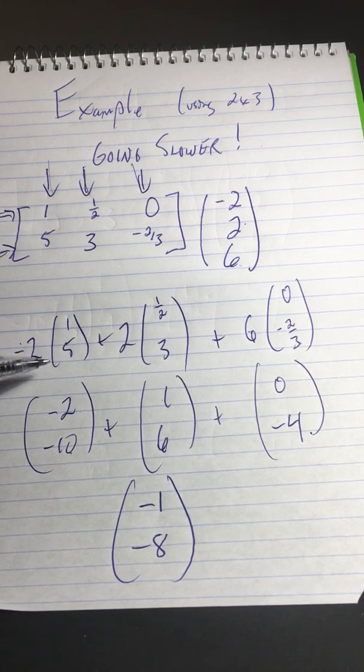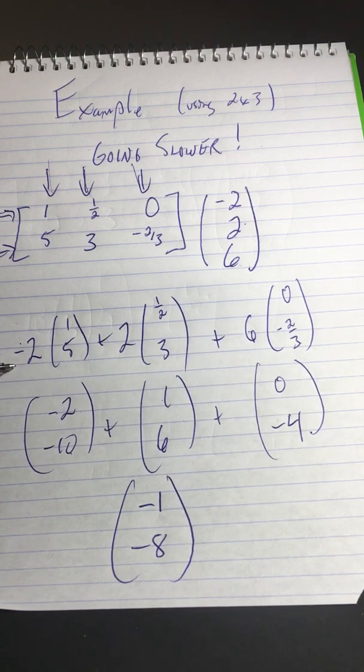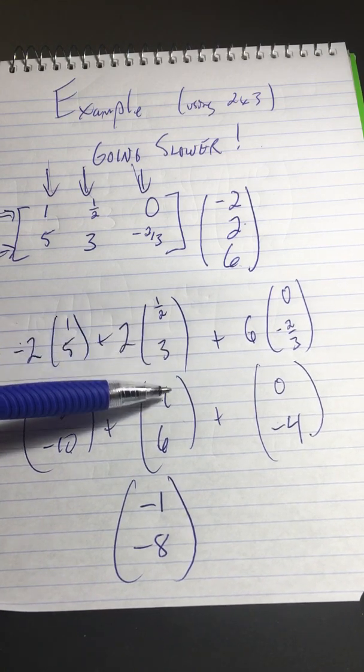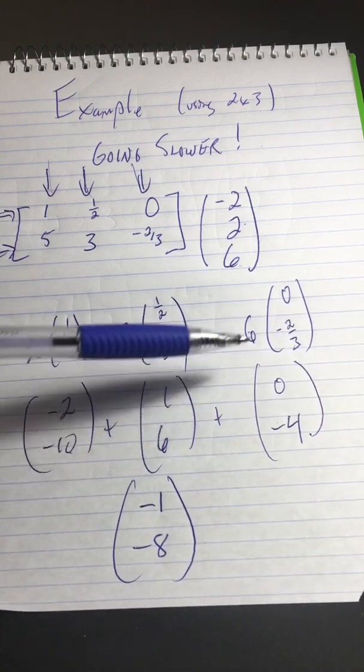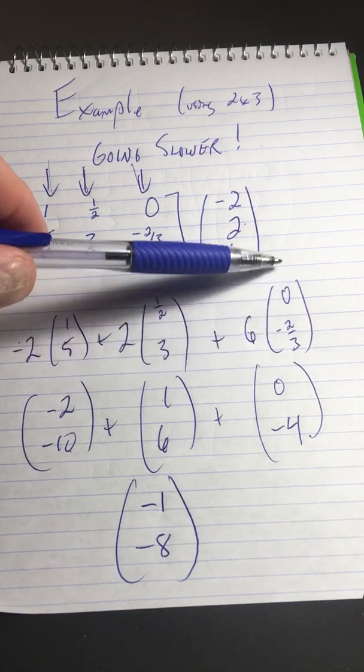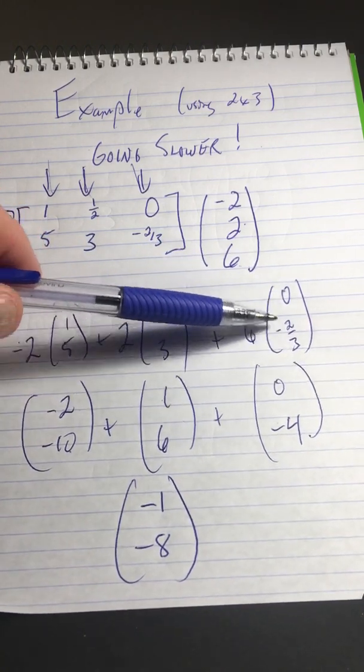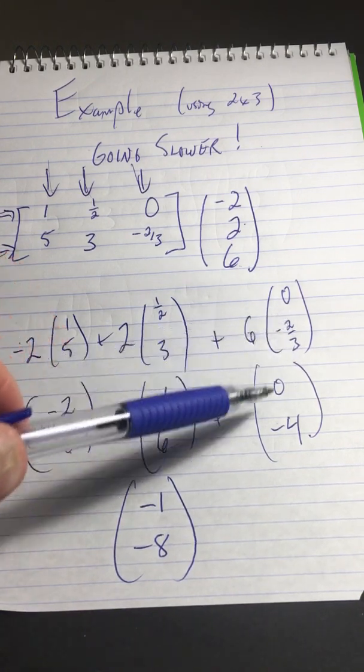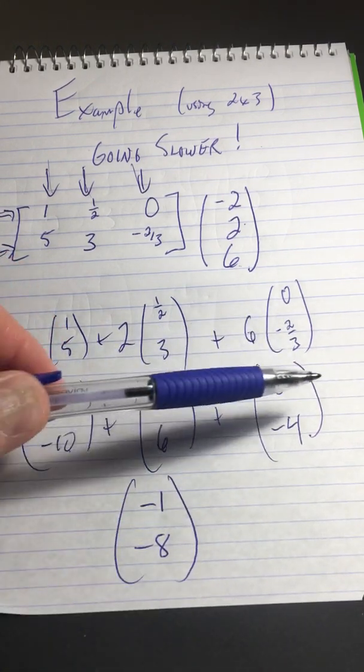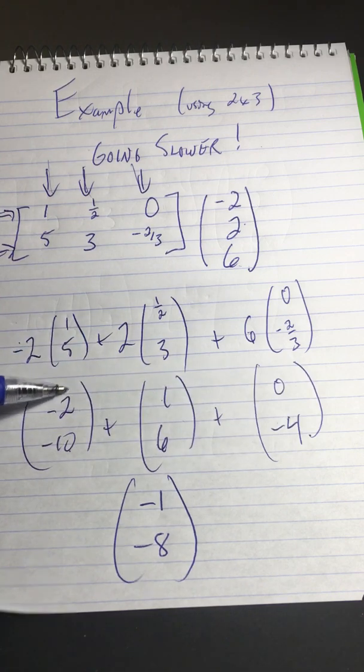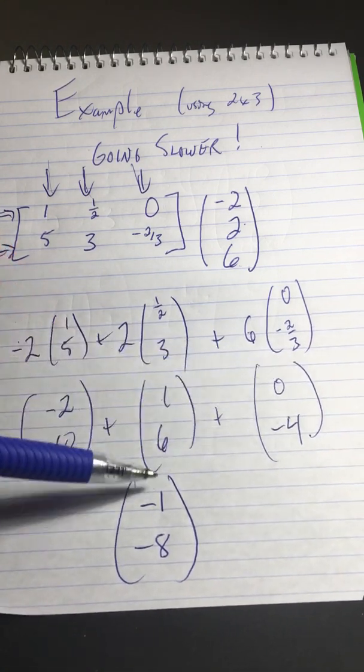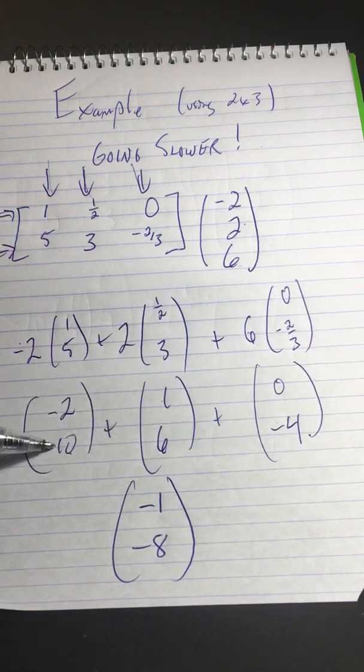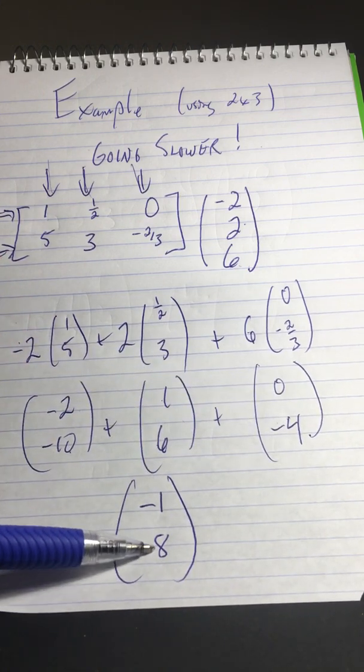Now, scaling this is easy. 1, 5 becomes negative 2, negative 10 when you multiply by negative 2. 1, half, 3 becomes 2, 1, 6 when you double everything. And then when you sextuple 0, you still got 0. And when you sextuple negative 2 thirds, well, you have negative 4, because 3 goes into 6 twice, and 2 times negative 2 is a negative 4. And now, how do I add those three vectors? Negative 2 plus 1 is a negative 1 plus 0 is negative 1. Negative 10 plus 6 is a negative 4 plus negative 4 is a negative 8.